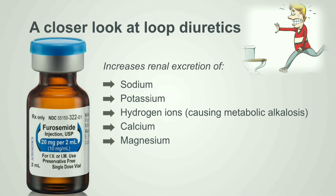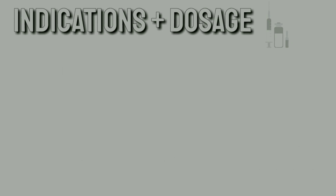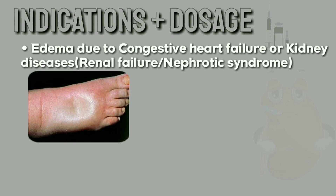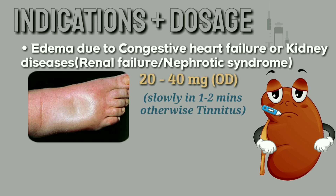This also increases excretion of potassium, hydrogen — causing metabolic alkalosis — as well as calcium and magnesium. Indications and dosage: edema due to congestive heart failure, renal failure, or nephrotic syndrome: 20–40 mg once daily, but refractory edema and hypertension may necessitate larger doses.